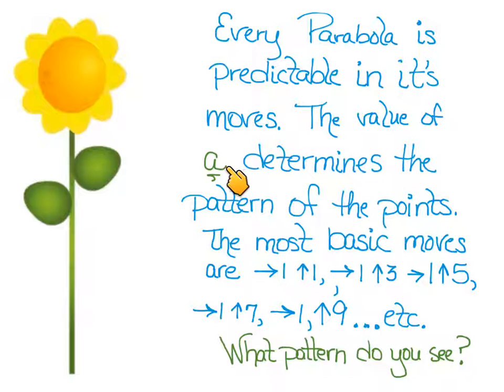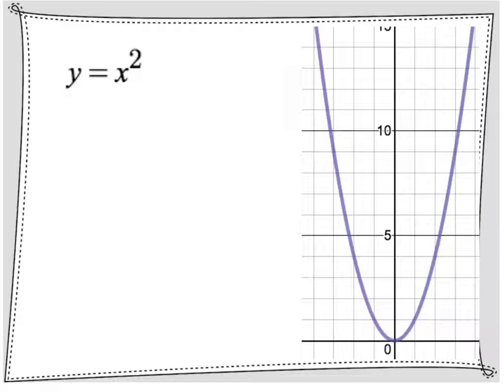Remember I used to call the value of A the commander-in-chief, and it wasn't just because it controlled whether the parabola was up or down, or wide or thin, but it also kind of controls these pattern points as we're about to see. So let's take a look at the most basic mother function, and I'm going to just take this graph and I'm going to highlight the readable points here.